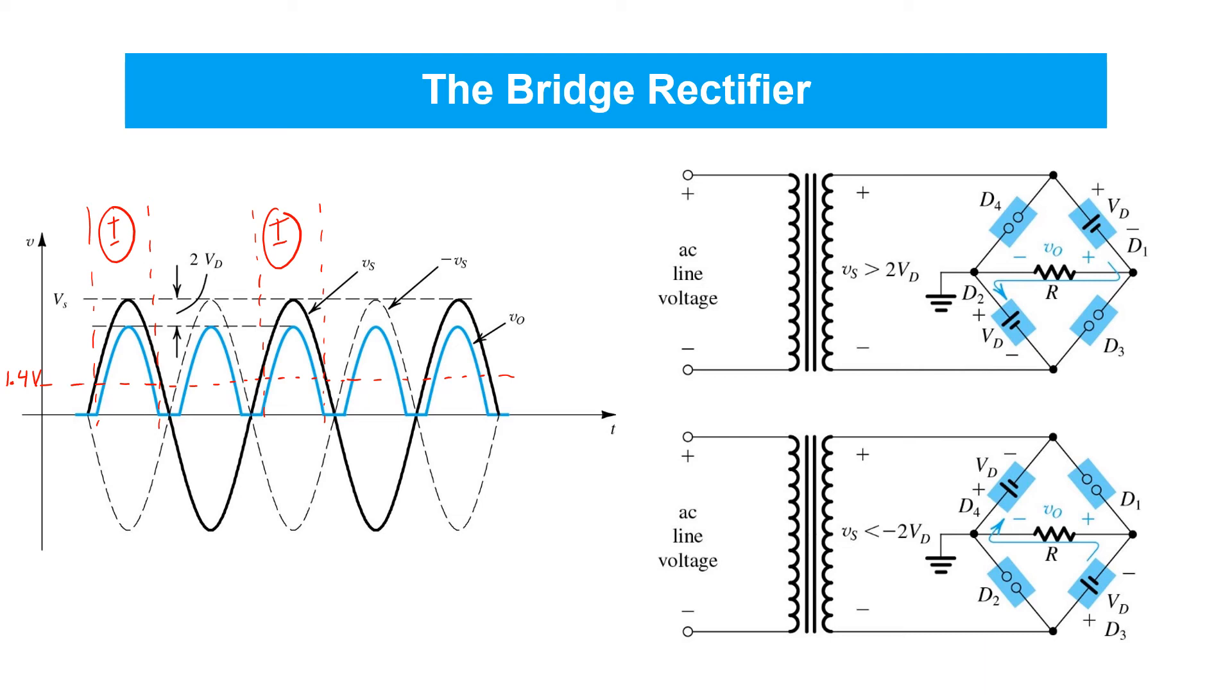And then we've got the situation shown over here on the top right, where we found that VO equals VS minus 1.4 volts.